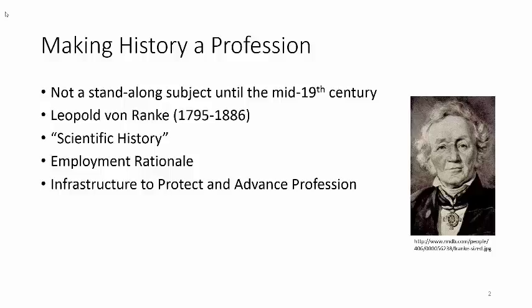He devised the seminar method that spread into the United States through his students and his students' students. These students usually received advanced training in the seminars by using archives and government records to conduct research that delivered new understandings and interpretations, and even revealed evidence that was previously unknown. Students and successors of Von Ranke developed versions of what you might call scientific history — that eschewed literature as a source, that discounted narrative as a delivery system, and that demanded the use of primary sources from archives and records to support arguments that explained rather than recounted events.